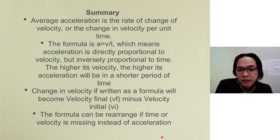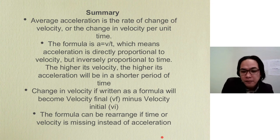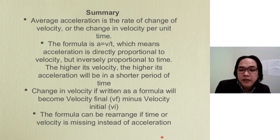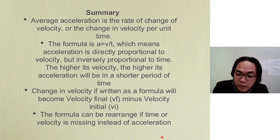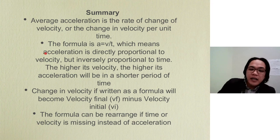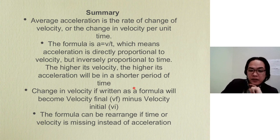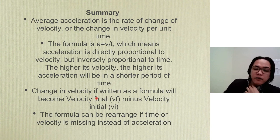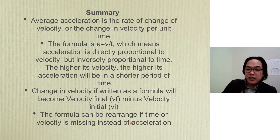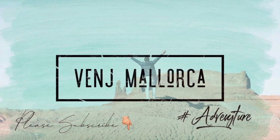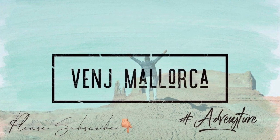To summarize: average acceleration is the rate of change of velocity, or the change in velocity per unit of time. The formula is A equals delta V divided by T. Acceleration is directly proportional to velocity but inversely proportional to time — the higher the velocity, the higher the acceleration in a shorter period of time. Change in velocity written as a formula becomes VF minus VI. The formula can also be rearranged if time or velocity is missing instead of acceleration — we'll do that on Wednesday. Thank you for watching, I hope you learned something today!